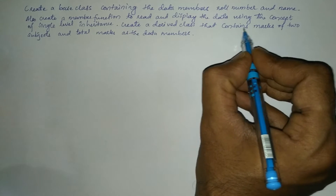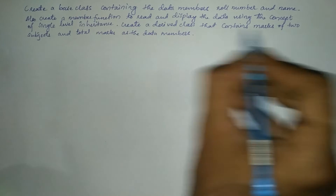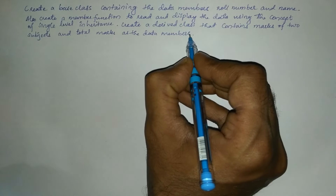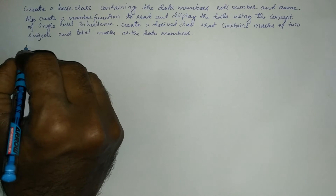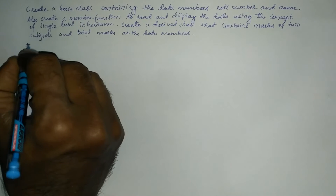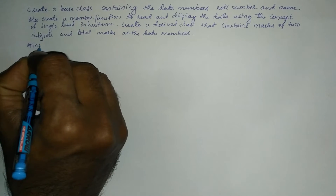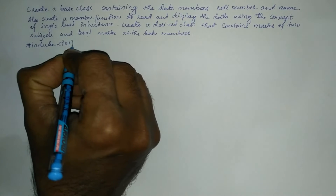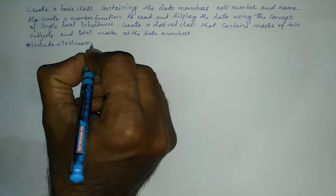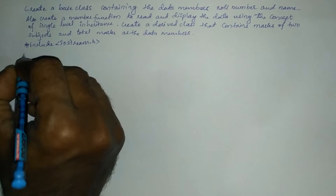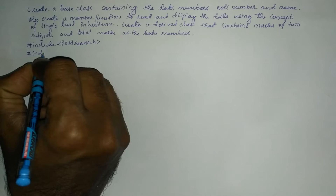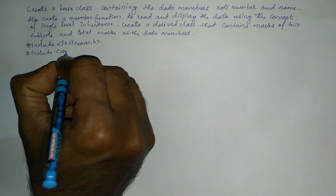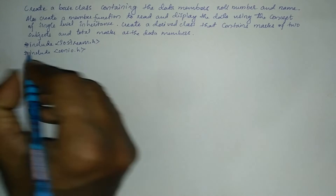Create a derived class that contains marks of two subjects and total marks as the data members. So let us write the preprocessor directives: hash include input output stream dot h, hash include console input output dot h.